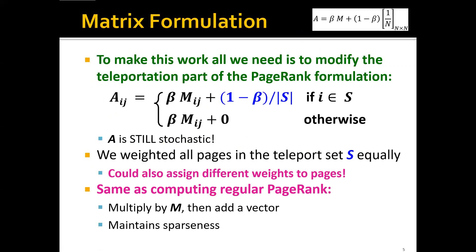So to make this work, all we need is just to modify the teleportation part of the PageRank formulation. Remember that in our power iteration method, we will actually calculate the new stochastic matrix A using a sum of two terms. And in this new version, it's actually very similar. Let's say that we want to calculate A_ij. And so basically, this is the probability of the walker moving from node j to node i. And if this i happens to be in the teleport set, so it's topic relevant, then the A_ij will have two terms. The first term is the same as usual. It's beta times M, which is the old stochastic matrix.